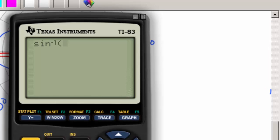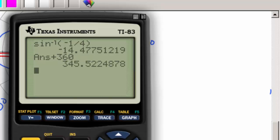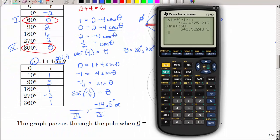Now before I punch that into my calculator, I want you to think. What quadrants, what two quadrants, is the sine negative? Quadrant 3 and quadrant 4. So I need two answers. So inverse sine of negative 1 divided by 4. I get negative 14 degrees. Well, that is in quadrant 4. We're going to call it 345.5 degrees. But how do I get quadrant 3?